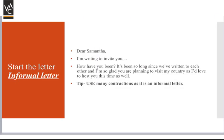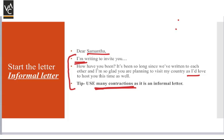For the informal letter, it always starts with the friend's name because you are writing to a friend. You can use many contractions — your examiner will be happy to see them, as it shows you know it's an informal register. For example: 'I'm writing to invite you,' 'How have you been? It's been so long since we've written to each other,' or 'I'm so glad you're planning to visit my country.' After the opening statement, leave a line and answer the first bullet point, second bullet point, and third bullet point in order.